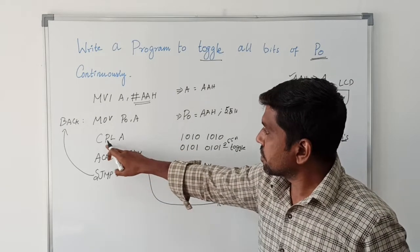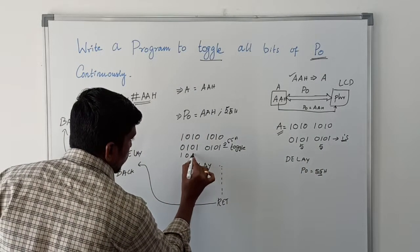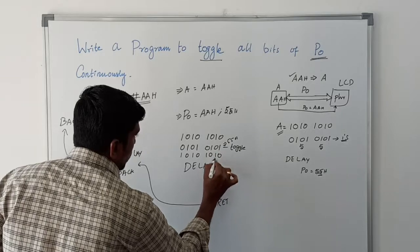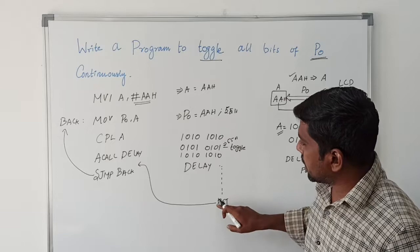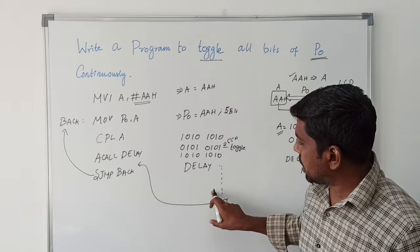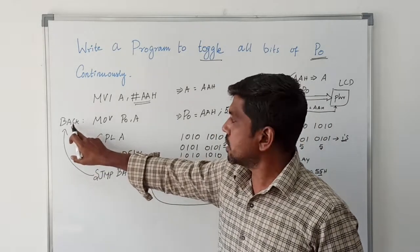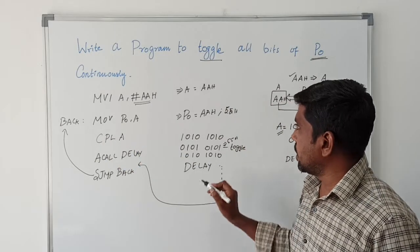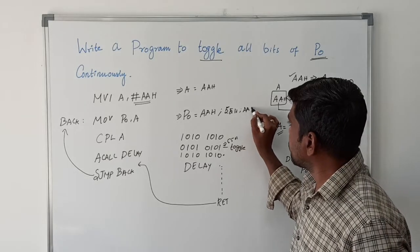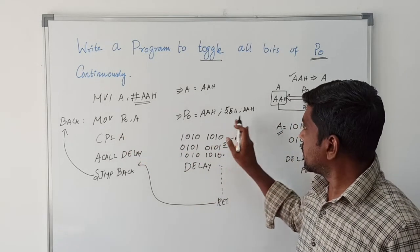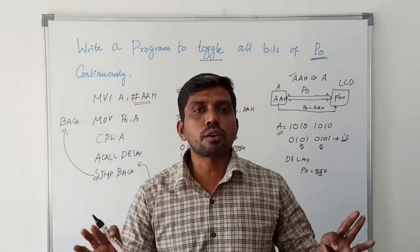Then it comes to the next instruction CPL A — complement of the accumulator content. Taking the one's complement gives 10101010. Then the delay is introduced, the delay subroutine executes, and it returns to the main program. Once again the program counter skips back to the label, executing MOV P0, A. Now the accumulator content is AAH, so after execution P0 carries the data AAH. This loop is executed continuously. This is the concept of the program.